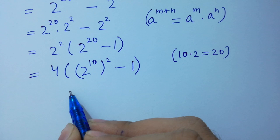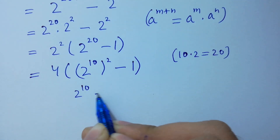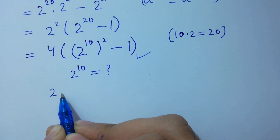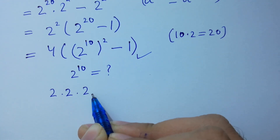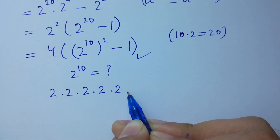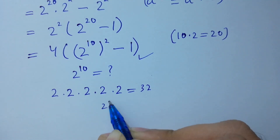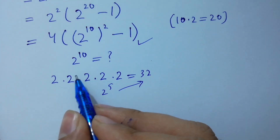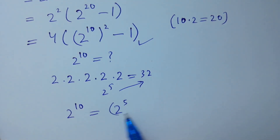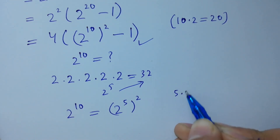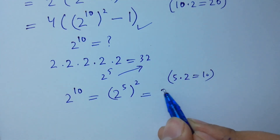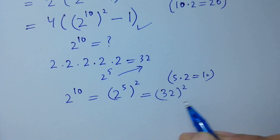Next, we are going to find what is 2 to the power 10. Since 2 times 2 is 4, 4 times 2 is 8, 8 times 2 is 16, 16 times 2 is 32, which is 2 to the power 5. So to find 2 to the power 10, it is the same as 2 to the power 5, to the whole power 2, since 5 times 2 equals 10. We put 32 to the power 2.